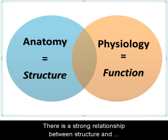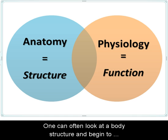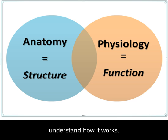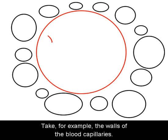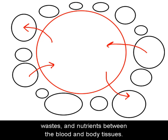There is a strong relationship between structure and function in the life sciences. One can often look at a body structure and begin to understand how it works. Take, for example, the walls of the blood capillaries. They are very thin to allow efficient exchange of gases, wastes, and nutrients between the blood and body tissues.